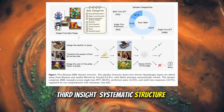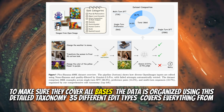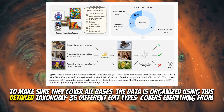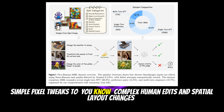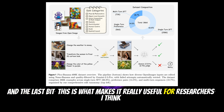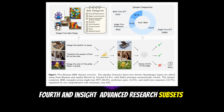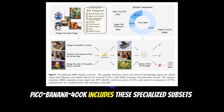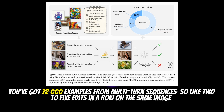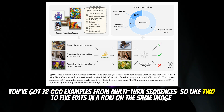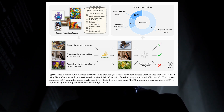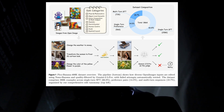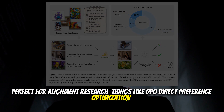Third insight: systematic structure. The data is organized using a detailed taxonomy with 35 different edit types, covering everything from simple pixel tweaks to complex human edits and spatial layout changes. Fourth insight: advanced research subsets. It's not just standard training data — Pico Banana includes specialized subsets: 72,000 examples for multi-turn sequences of two to five edits in a row on the same image, and 56,000 preference pairs — a successful edit paired with a failed one for the same instruction, perfect for alignment research like DPO, direct preference optimization.